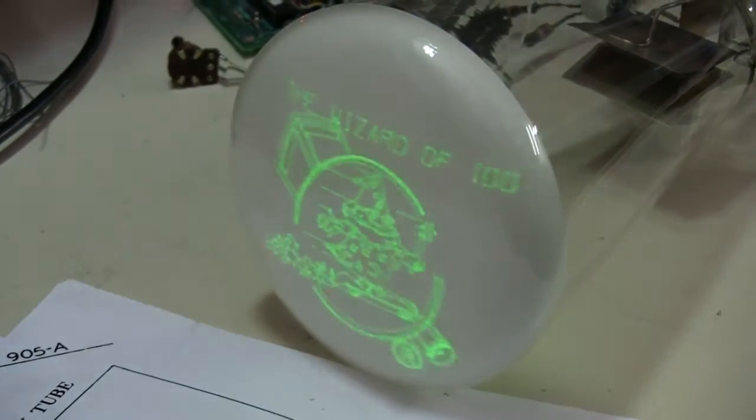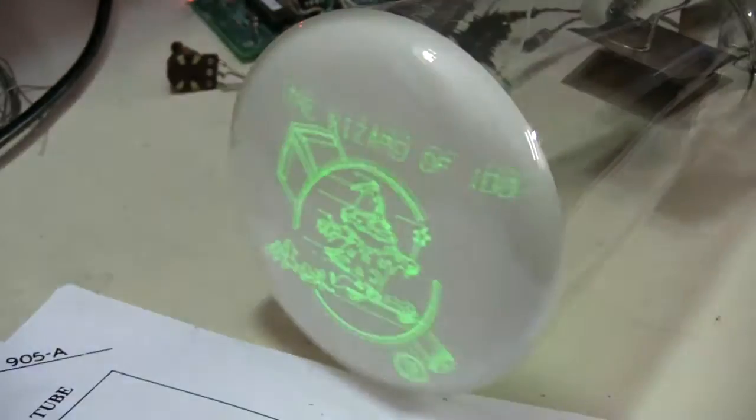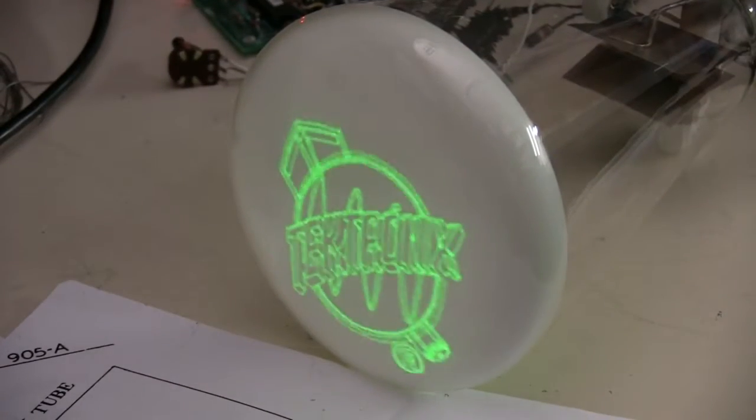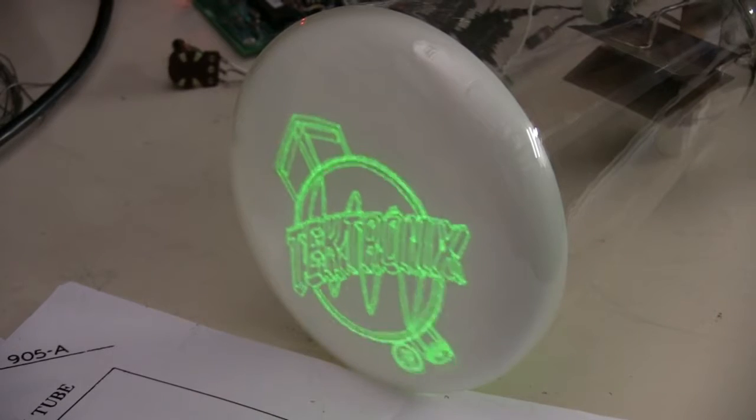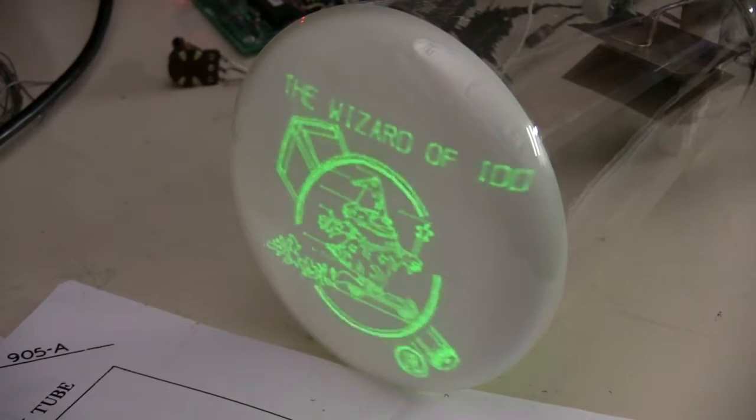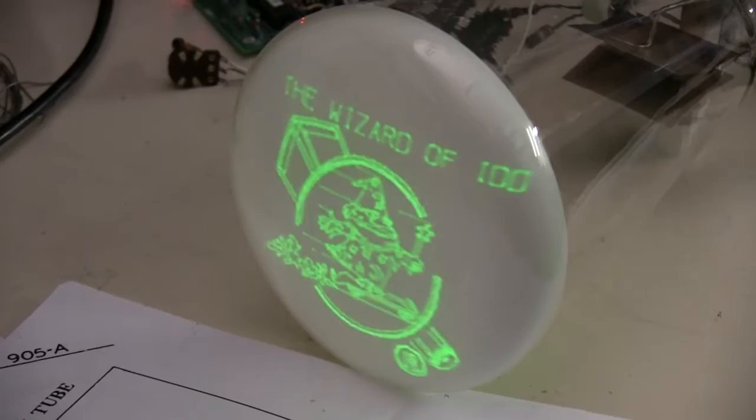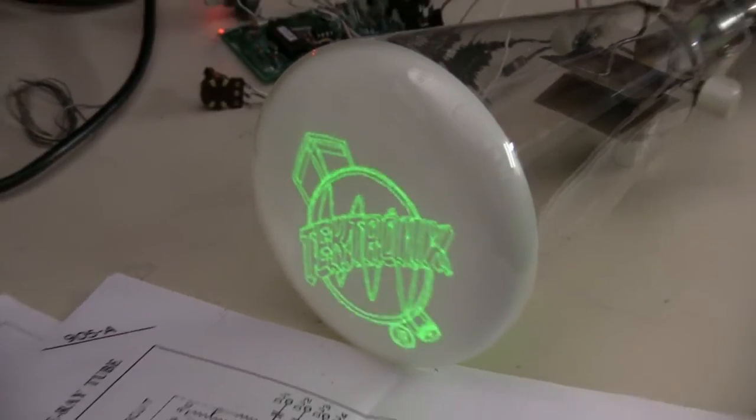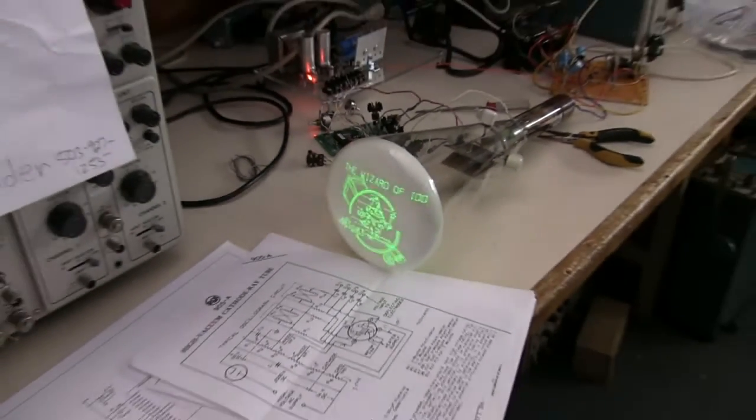And here's the first image on screen and you can see it's swimming quite a bit. It's a combination of magnetic interference and also the variation, as it turns out, in the accelerating potential. The 1100 volts had about 100 volts of ripple on it.